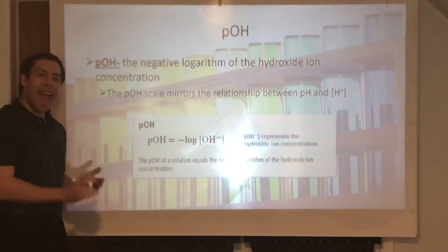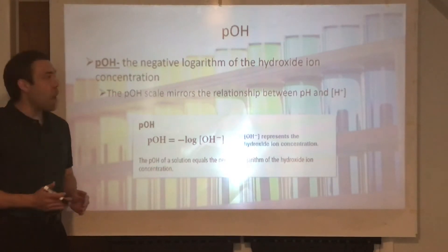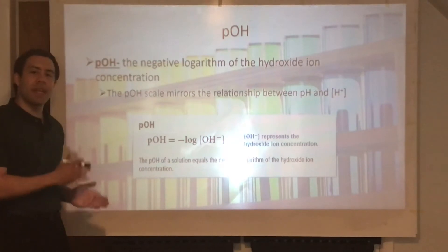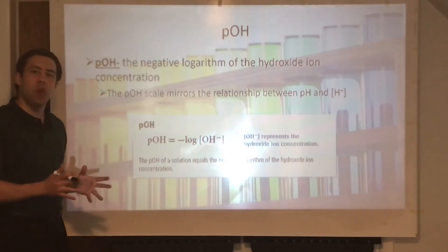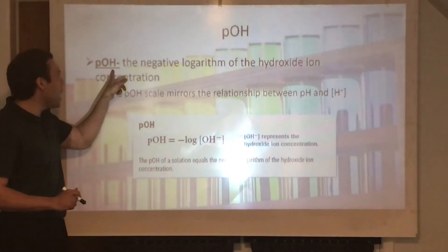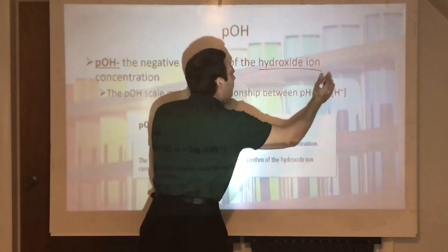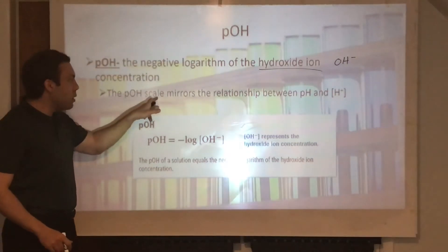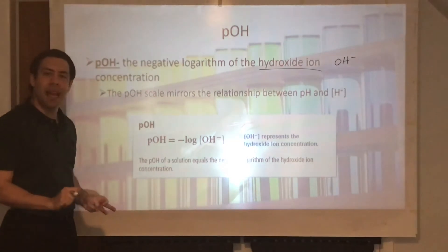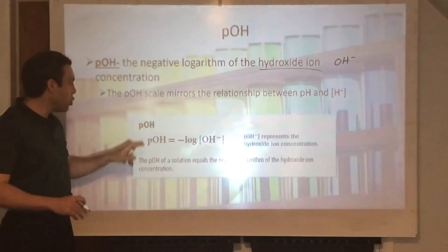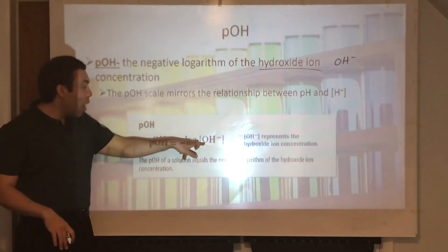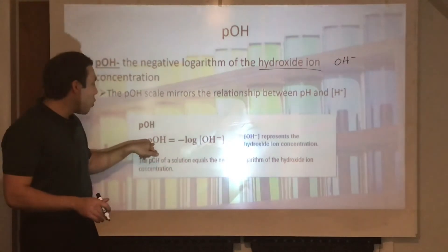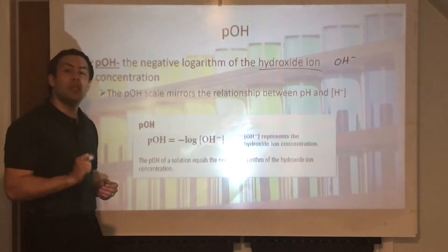But what about bases? We had pH, which was the concentration of hydrogen ions. We also have pOH, which is the concentration of OH-minus or hydroxide ions. An Arrhenius base dissociates and gives off OH-minus ions in solution. So, pOH is the negative logarithm of the hydroxide ion concentration.